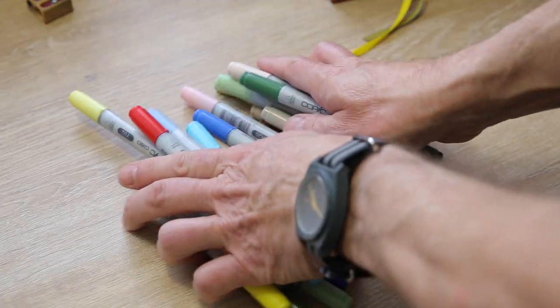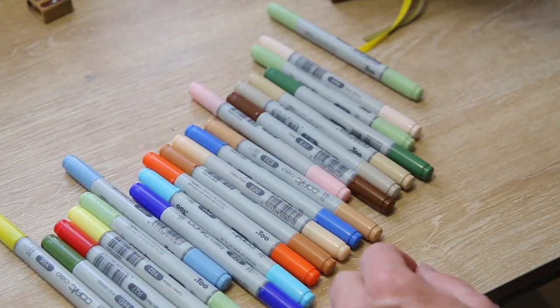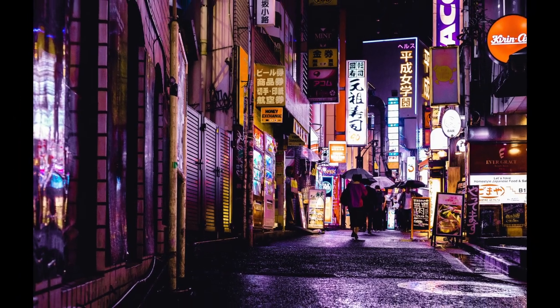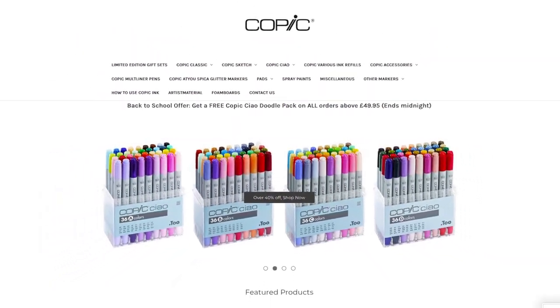Copic has something of a cult following, even though other manufacturers also produce great markers. All things Japan really have street cred at the moment and Copic is a brand of professional quality markers founded in 1987 in Tokyo.